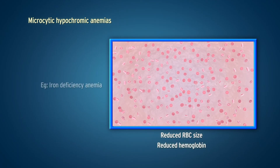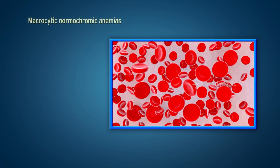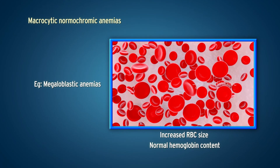Macrocytic normochromic anemia is characterized by increased RBC size but normal hemoglobin content. An example is megaloblastic anemia.